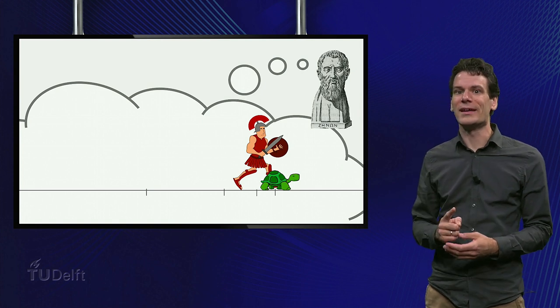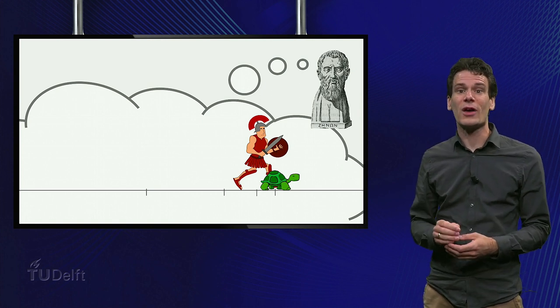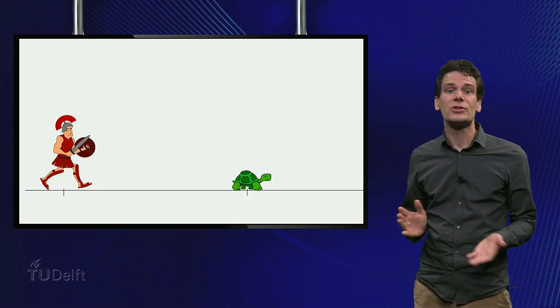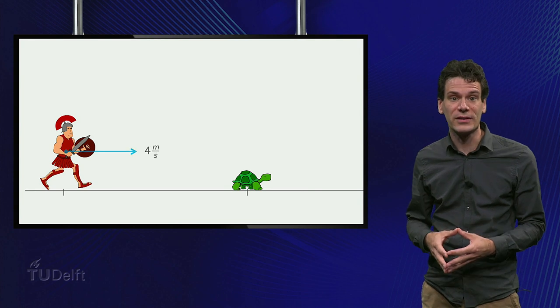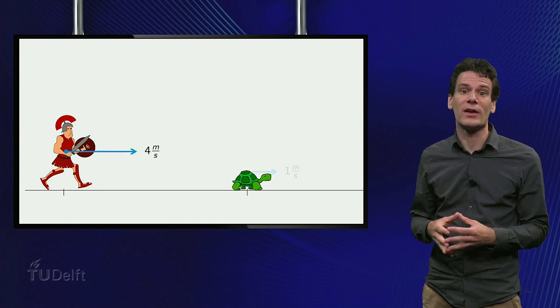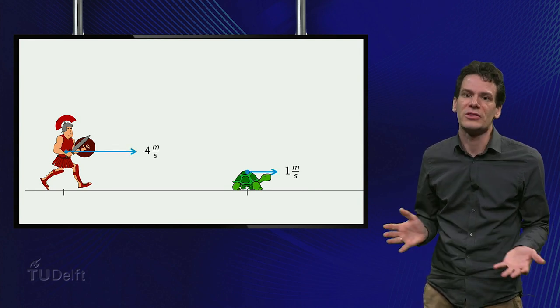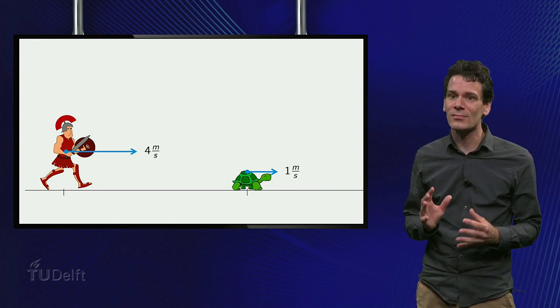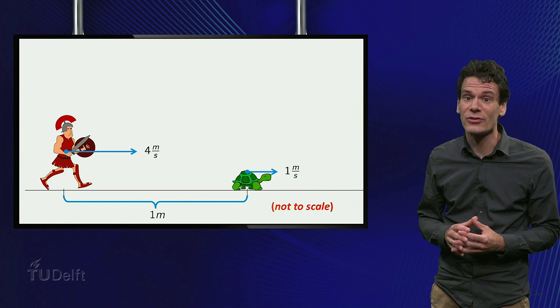The real riddle is, what is wrong with Zeno's argument? Let's look at the contest in a more quantitative way. Suppose Achilles runs at 4 meters per second, and the tortoise runs at 1 meter per second. This is extremely fast for a tortoise, but it works nicely in calculations. Suppose the tortoise gets a head start of 1 meter.